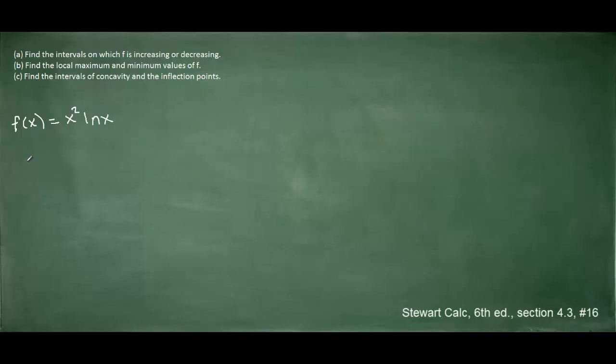Since this function is the product of x squared and the natural log of x, we will have to use the product rule to compute the derivative. Recall that the product rule states that the derivative is equal to the first function multiplied by the derivative of the second function. The derivative of natural log of x is 1 divided by x, plus the second function multiplied by the derivative of the first function. The derivative of x squared is 2x.